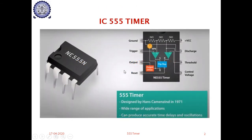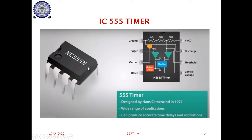The 555 timer is available as an IC — an integrated circuit version — which has got 8 pins in total: 4 pins on one side and another 4 pins on the other side. This kind of package is called a dual inline package. This IC is manufactured by a company called Signetics, and they give it the specific name NE555N. This is the IC version of the 555 timer.